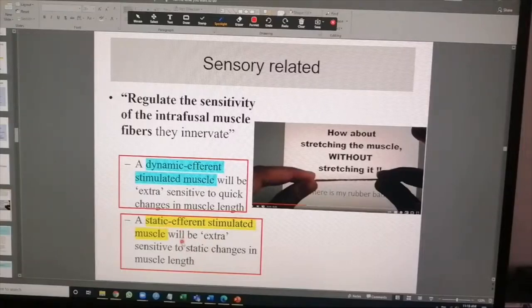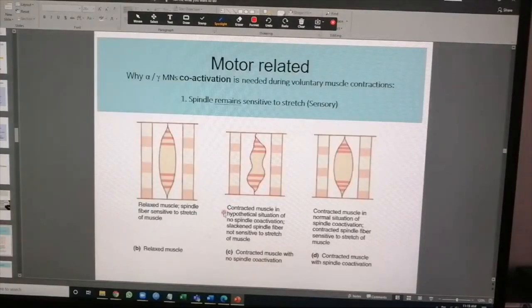Just nothing new, to be honest. And this is where the co-activation now comes in. So in the motor-related function of gamma motor neurons, we've already done this. If this is a muscle, it's relaxed, muscle spindle fibers are sensitive to stretch, so it's minding its own business. Now you contract the extrafusal. This is extrafusal, this is the spindle, so you understand?